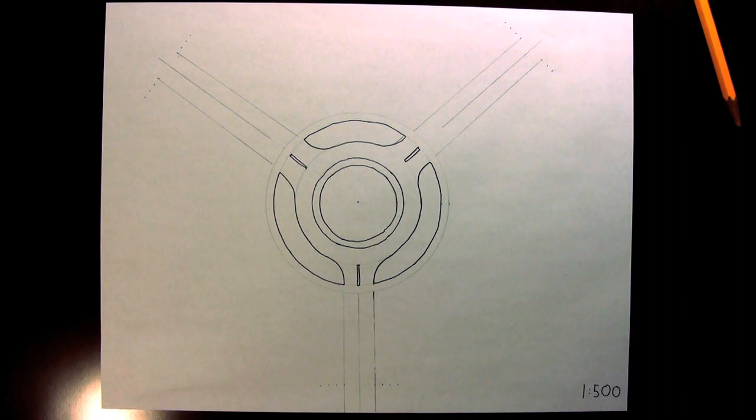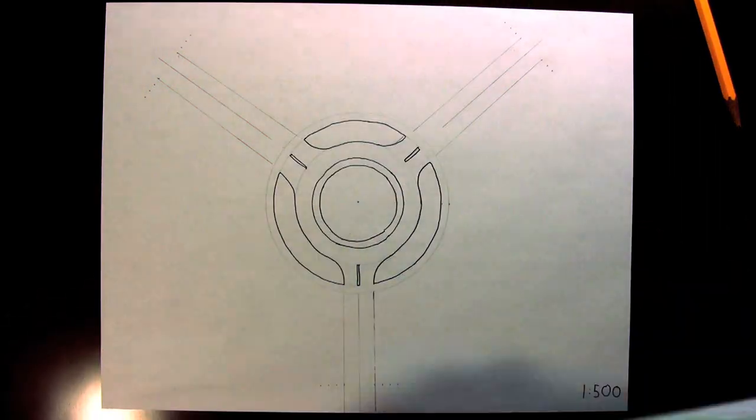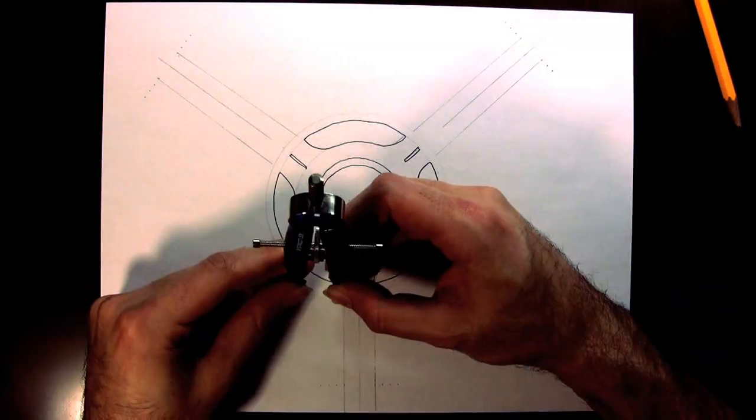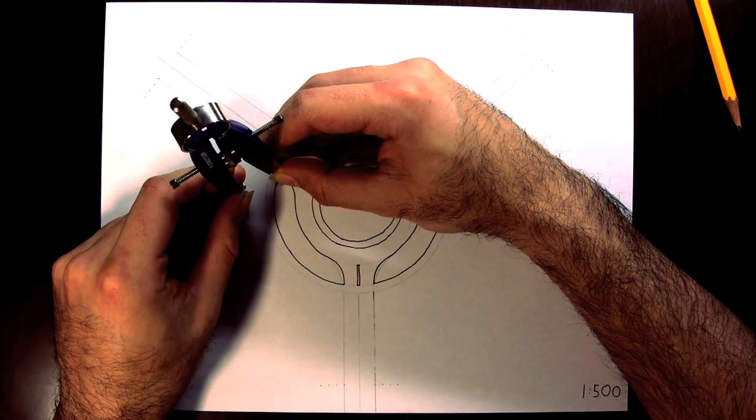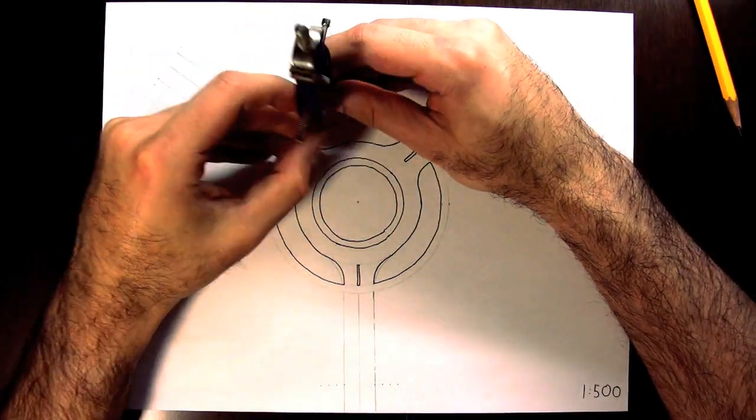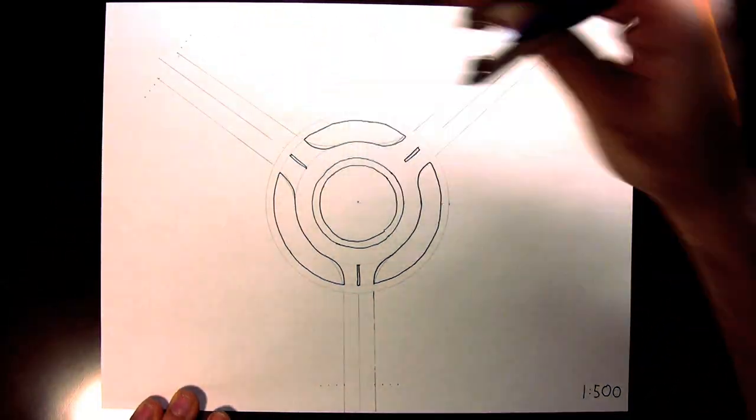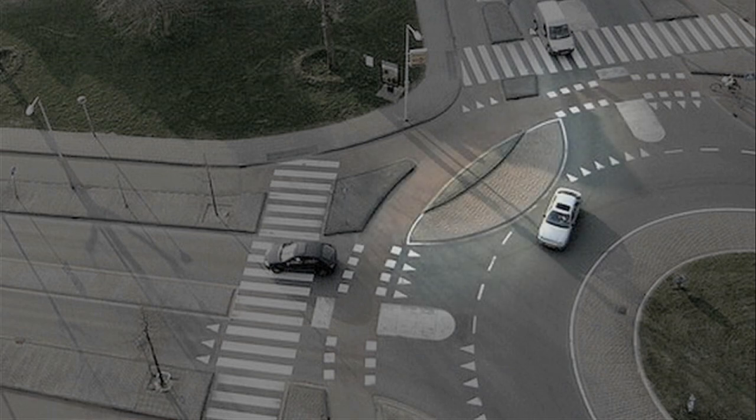But now there's a problem. Large vehicles like trucks and buses may not be able to make it around the tight curves I just drew. So I'm going to go over the curves again, this time with a larger 12 meter radius. The area between the two radii will be another concrete runover island. It would be raised enough to discourage car drivers from cutting the corner, but smooth enough to allow trucks and buses to go over it without issue.